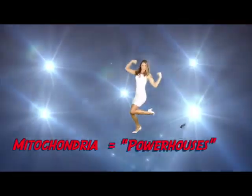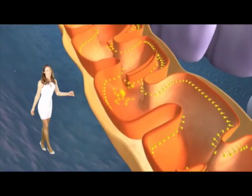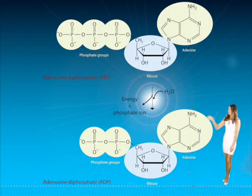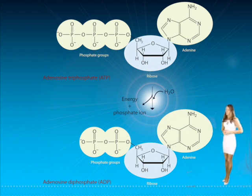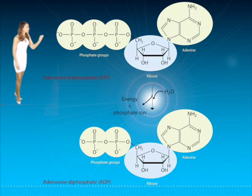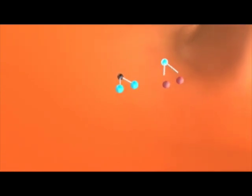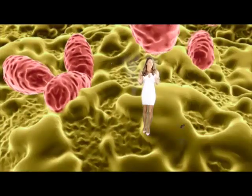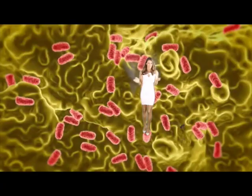Mitochondria are the powerhouse of the cell. They provide energy wherever it is needed to carry out cellular functions. They recharge adenosine diphosphate molecules, also known as ADP — molecules with two phosphates attached, di meaning two, which have little energy. They transform it to adenosine triphosphate, also known as ATP, by attaching a third phosphate, tri meaning three, giving high energy which can be used for all cell functions. The more energy a cell needs, the more mitochondria it will contain.